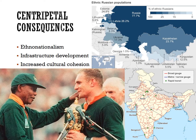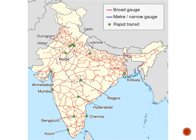Strong infrastructure can also serve as a social and economic centripetal force. A country that has invested heavily in airports, interstate highways, and railways maintains strong connections that promote greater interaction between core and peripheral areas. Communication and energy infrastructure, like the internet and power plants, also helps maintain connections and ensure a more even distribution of government resources. India's well-developed railroad system, for example, helps connect the most remote rural villages to its major cities.